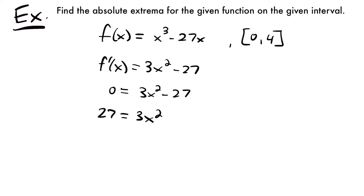Now let's set this equal to zero and solve for our values of x to find any critical numbers. We have 0 equals 3x squared minus 27. Adding 27 to both sides gives 27 equals 3x squared. Dividing both sides by 3 gives 9 equals x squared. Taking the square root of both sides, x equals positive or negative 3. Since our interval is from 0 to 4, we don't need the negative 3, so it's just positive 3.